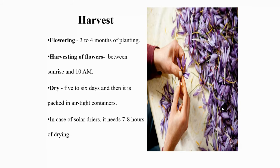Regarding harvesting, saffron starts flowering within 3 to 4 months of planting. If planted in June, they would ideally start flowering by October. Harvesting of flowers must be done at the first appearance of light in the sky, before sunrise; the flowers must be plucked between sunrise and 10 am. The stigma strands are dried under the sun for 5 to 6 days and then packed in airtight containers. In case of solar dryers, it needs 7 to 8 hours of drying.